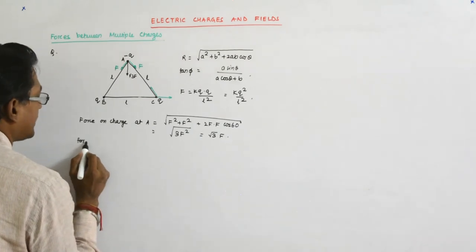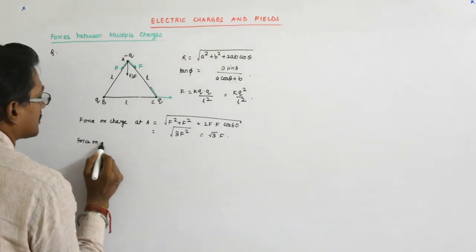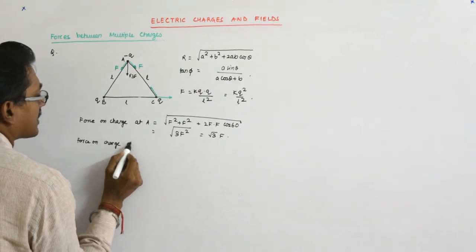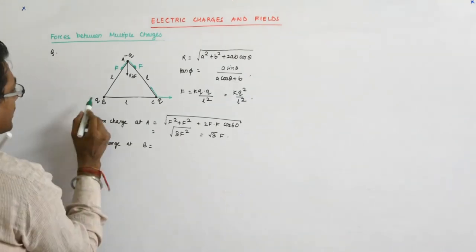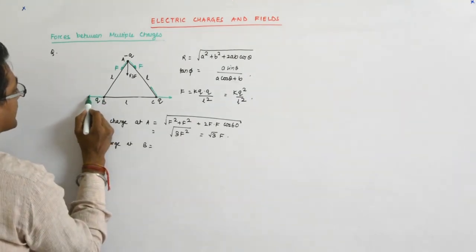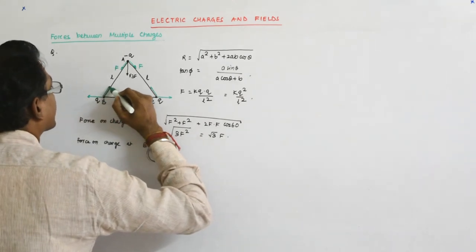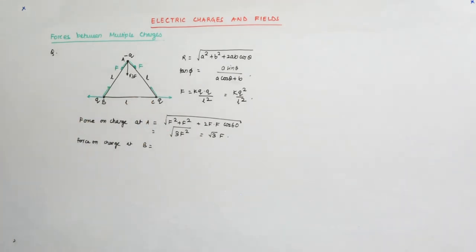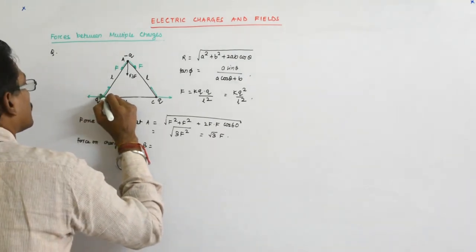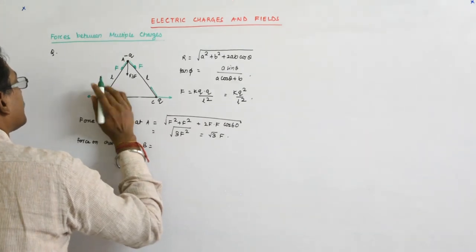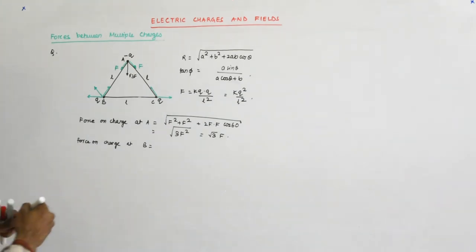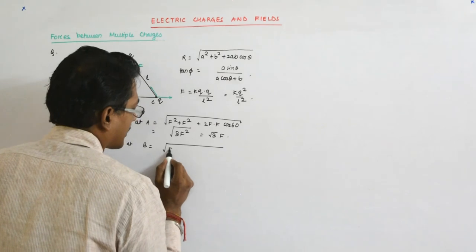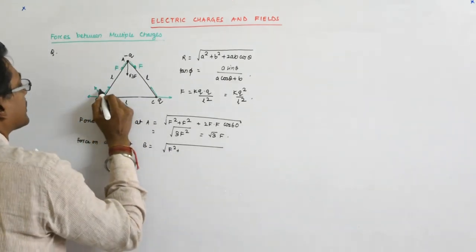Here force on charge at B is equal to what? This force will be going away like that. This force is getting attracted like that. And their sum, since they are equal forces, their sum will be a bisector. So my resultant will be at an angle of 60 degree and will be equal to that. However, we should be applying the formula F square. What is the angle? The angle is 120 degree, correct?